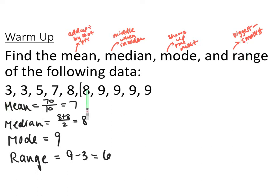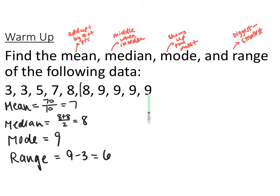For the mean, I added all these up and got 70. There are 10 data points, so 70 divided by 10 is 7. Median — they're already in order from smallest to biggest. Since there's 10 data points, the median would be between the 5th and 6th, so it's the average of those two. 8 plus 8 divided by 2 is 8, so our median is 8. Our mode is 9, since 9 shows up the most. And range is our biggest number, 9, minus our smallest, 3, so 6. Just a little bit of review before we start our stats.